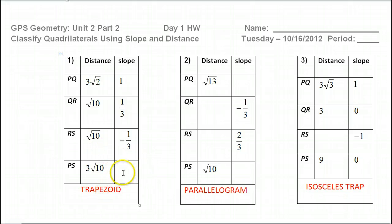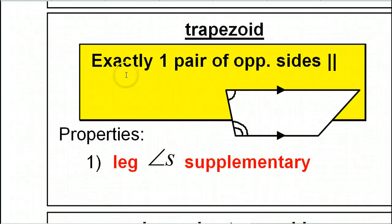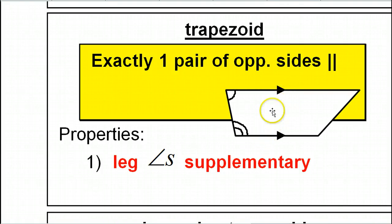On problem number one, we're only missing one value: PS. But we're told it's a trapezoid. In a trapezoid, exactly one pair of opposite sides are parallel. So we're looking for one pair of sides to be parallel — that's really all we know about the sides of a trapezoid.